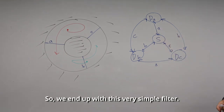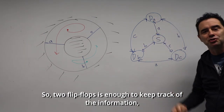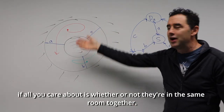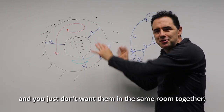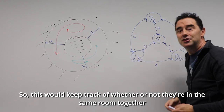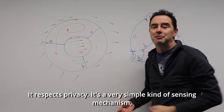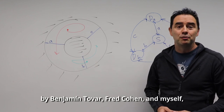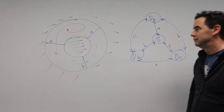We end up with a very simple filter — I call it a two-bit filter because there are only four states, so only two flip-flops are needed to keep track of whether or not they're in the same room. Maybe they have explosive personalities and you just don't want them in the same room together — this method keeps track of that with a very simple, privacy-respecting sensing mechanism. You can look for a journal article on this by my research group — Benjamin Tovar, Fred Cohen, and myself — called 'Sensor Beams, Obstacles, and Possible Paths.'